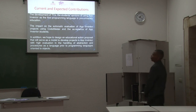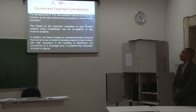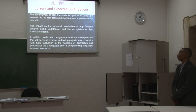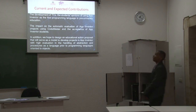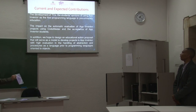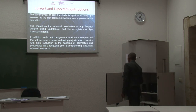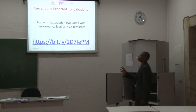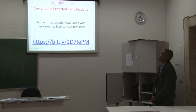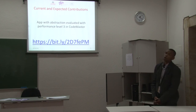In addition, we call for the design of educational guidelines that will serve as a model to develop projects in App Inventor with high evolution in the areas of abstraction and planning, using the language to program lines oriented to the target audience. Success and expected contributions involve achieving abstraction evaluated at performance level 3 in Code Master.